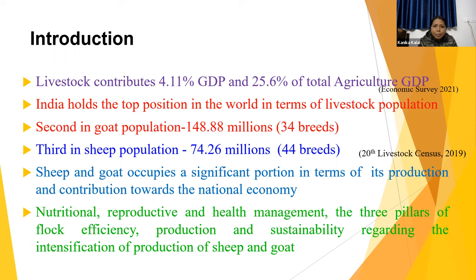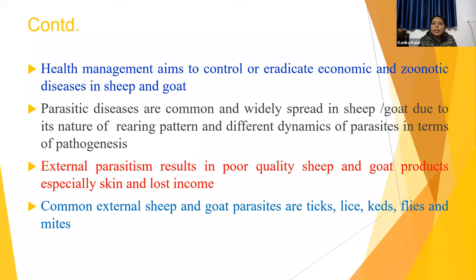To uplift this industry, there are three main pillars that we should work on: nutritional management, reproductive management, and health management. Health management aims to control or eradicate the economic and genetic diseases in sheep and goat.